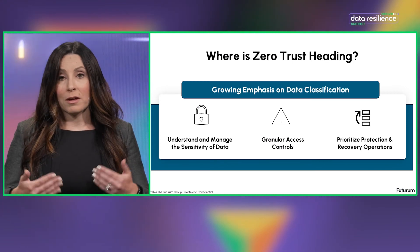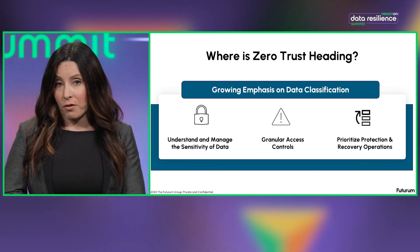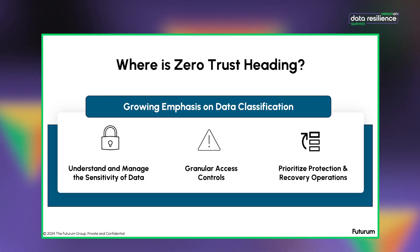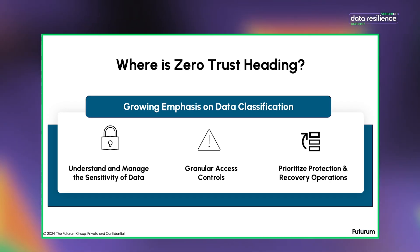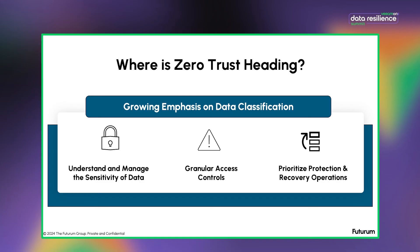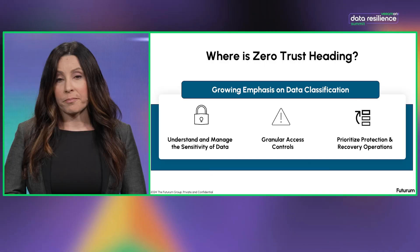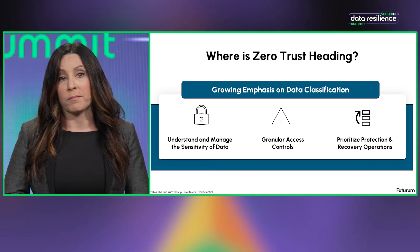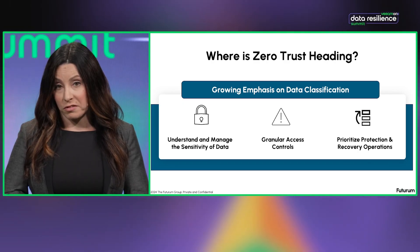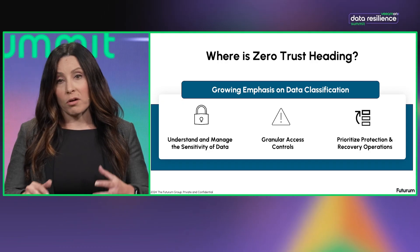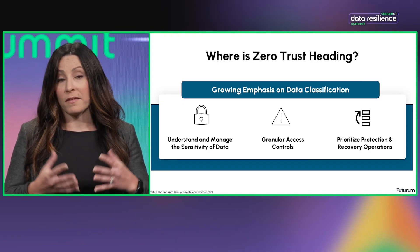Looking ahead over the next five years, we do expect zero trust to evolve. One of the big areas is least privilege access policies, which we expect will become more important. With that in mind, data classification will also become more important — it helps us understand and manage the sensitivity and value of various data, which can then be used to ensure appropriate levels of security controls are applied. Data classification also helps prioritize protecting and recovering the most sensitive data, which can be particularly useful for preventing data exfiltration. Additionally, data classification can not only inhibit access to sensitive data, but also facilitate logs of who had access to what data and when, in the event that a breach has occurred.